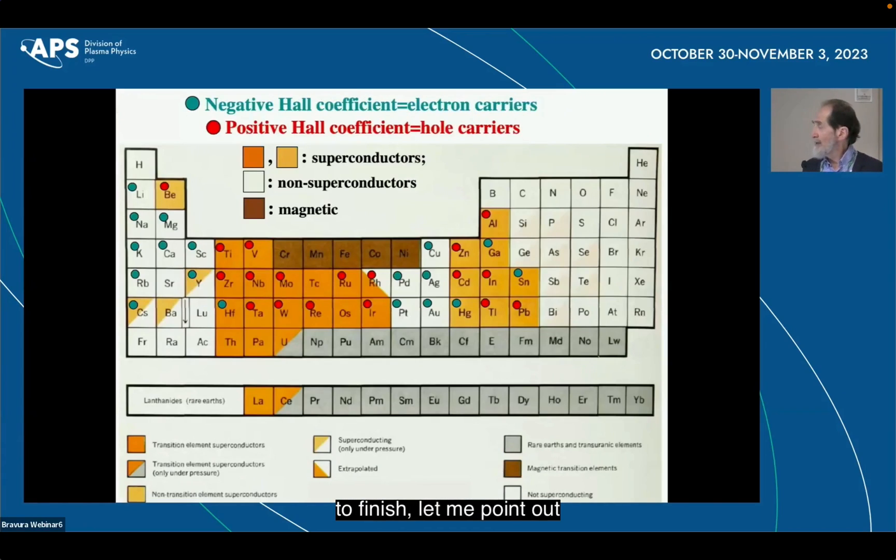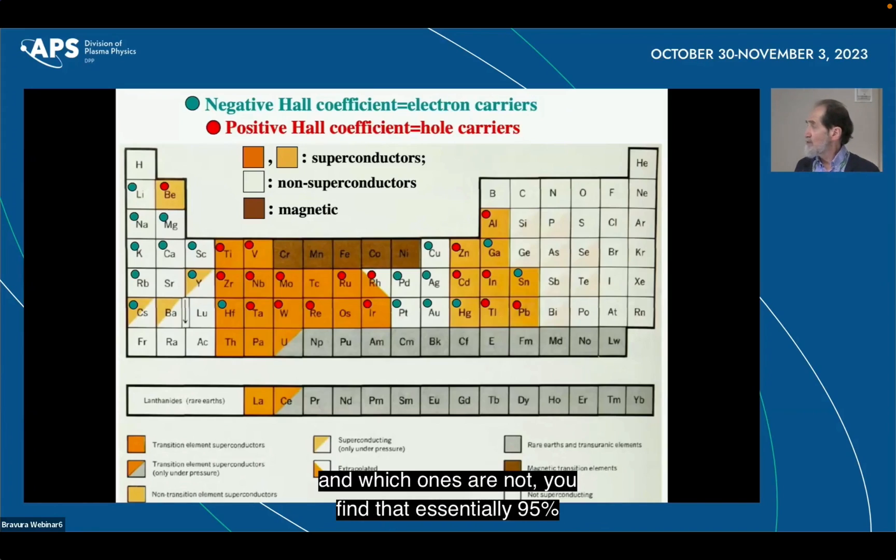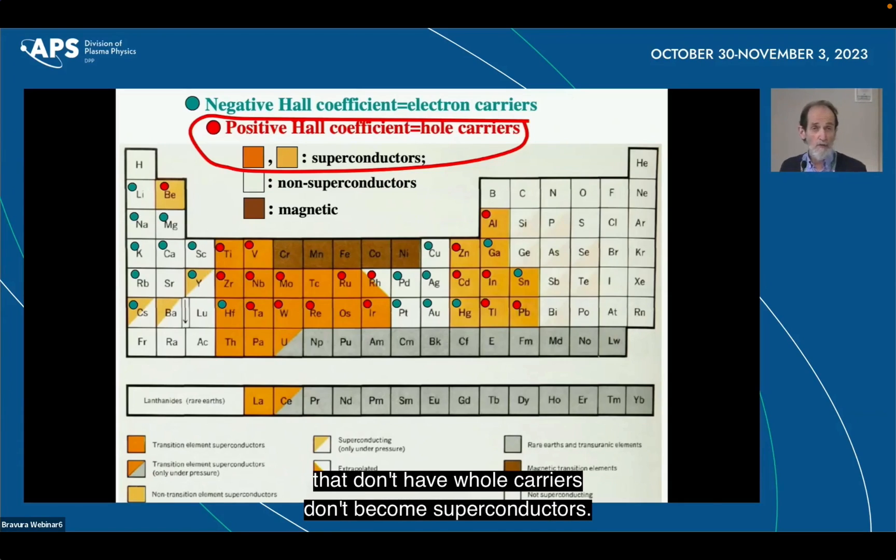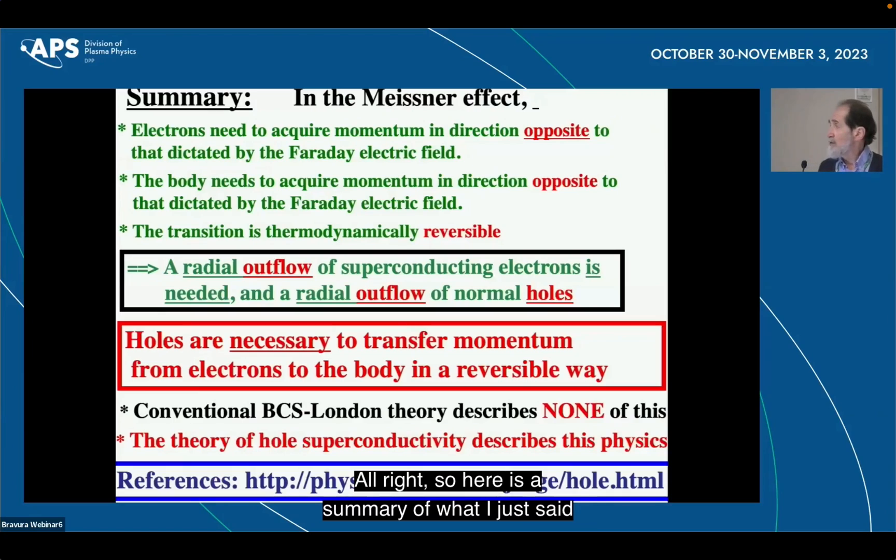Just to finish, let me point out that if you look at the periodic table, which materials are superconductors and which ones are not, you find that essentially 95% of the superconductors have positive hole coefficient, which says they have hole carriers, while materials that don't have hole carriers don't become superconductors. All right, so here is a summary of what I just said, and I guess I'm out of time.